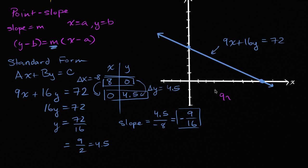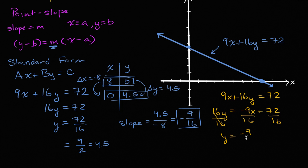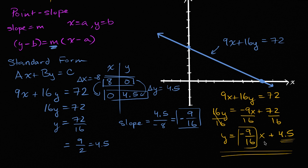So if you start with 9x plus 16y is equal to 72, and we want to put it in slope-intercept form, we can subtract 9x from both sides. You get 16y is equal to negative 9x plus 72, and then divide both sides by 16. You'll be left with y is equal to negative 9/16x, that's the slope, plus 72 over 16, that's 9 halves or 4.5. And this form, much easier to figure out the slope, and the y intercept jumps out at you, but the x intercept isn't as obvious.